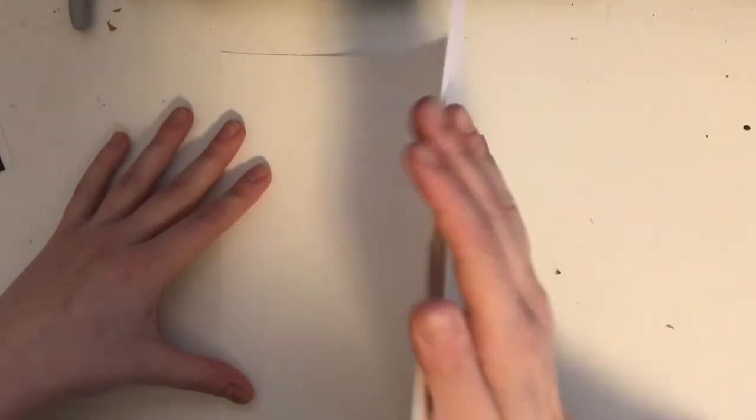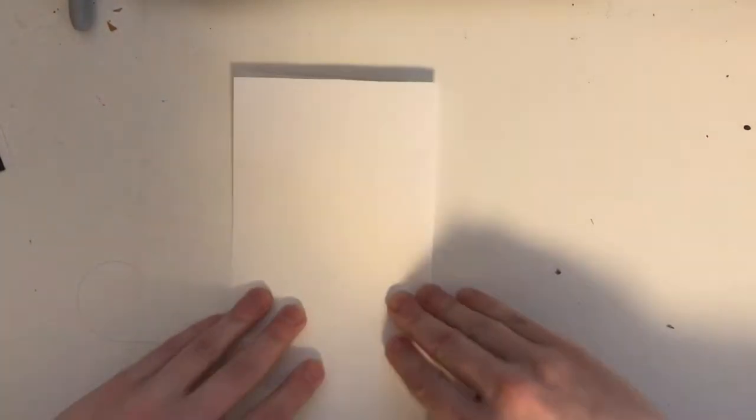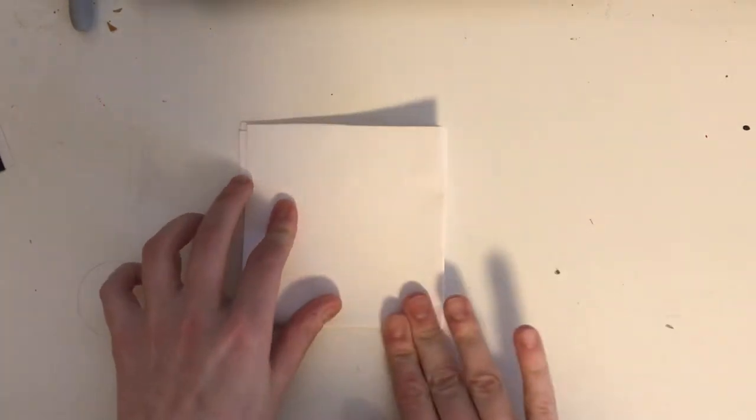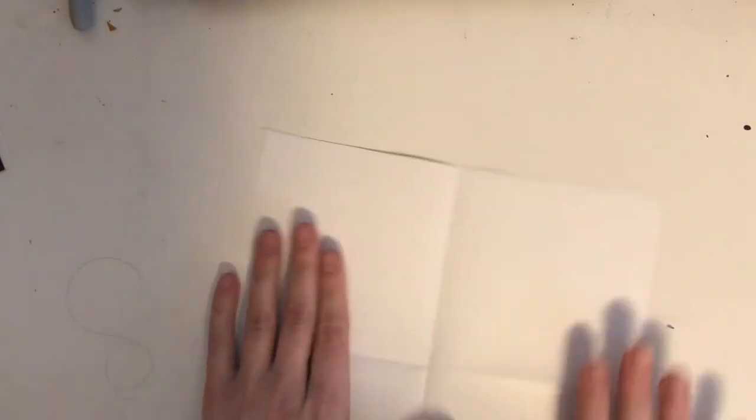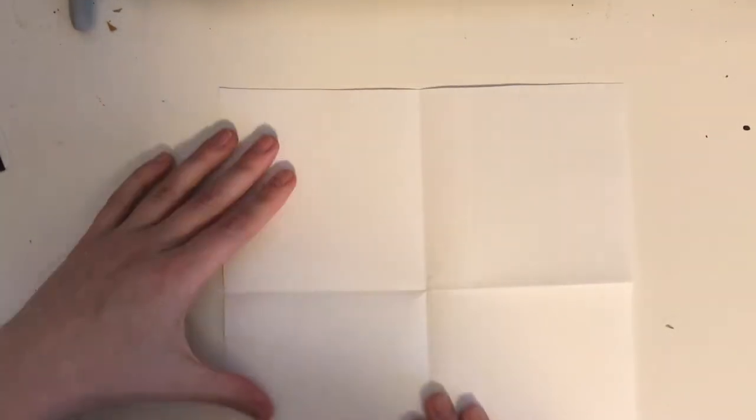What we're going to do first is we're going to divide our paper into fourths and there's a really easy way to get very nice even fourths and that's to fold it both ways. It doesn't have to be super perfect, no matter how you fold it it's going to end up pretty even. So now I have these fold lines that are going to tell me what to do and we're going to draw the same thing in each square, which sounds kind of weird, but we're going to draw the same thing.